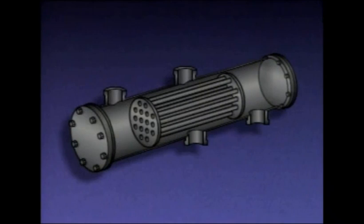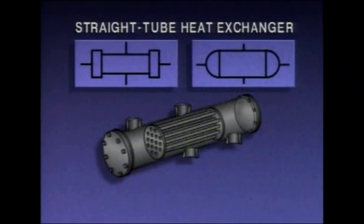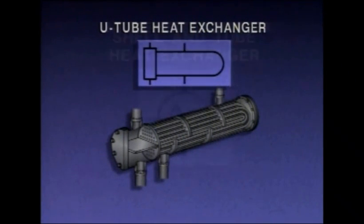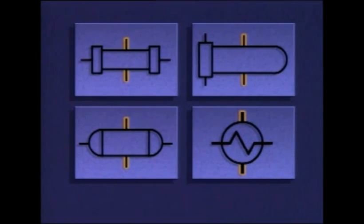In many processes, heat is transferred from one fluid to another, so these processes usually have at least one heat exchanger. In this example, steam is used to heat a process fluid. The process fluid flows through the tubes in the heat exchanger and the steam flows through the shell around the tubes, transferring heat to the fluid. This is a straight tube heat exchanger. These symbols are often used to represent a straight tube shell and tube heat exchanger. Another symbol represents a U-tube shell and tube heat exchanger, and one symbol may represent either type. Each symbol has lines representing the inlet and outlet for the two flow paths — one pair for flow through the tubes and the other for flow through the shell.